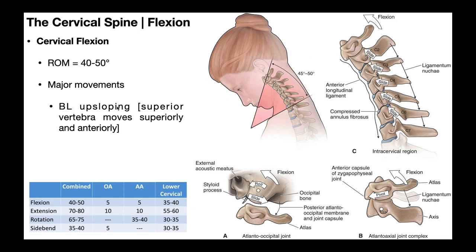Upsloping is where the superior vertebra moves superiorly and anteriorly relative to the vertebra below. For example, if we consider the C3-C4 segment, C3 is the superior vertebra and C4 is the inferior one. If C3 upslopes on C4, that means C3 glides or slides both anteriorly and superiorly relative to C4. We could also say that C4 glides superiorly and anteriorly relative to C5, and so on and so forth.